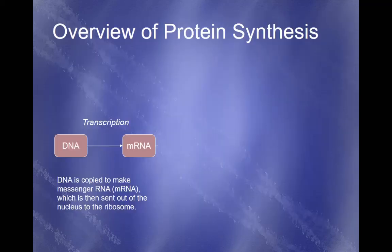Let's do a quick overview of transcription. We're going to make a copy of the DNA into messenger RNA or mRNA, which will then be sent out of the nucleus to the ribosome. That's the process of transcription. We store DNA in the nucleus to protect those original instructions and only send out a copy when making a protein.